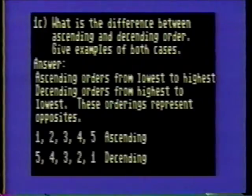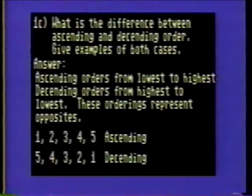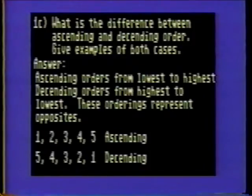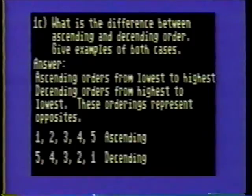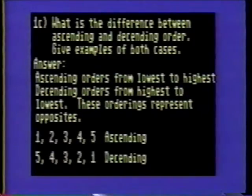Problem 1C. What is the difference between ascending and descending order? Give examples of both cases. Solution: Ascending order goes from lowest to highest. Descending order goes from highest to lowest. These orderings represent opposites.